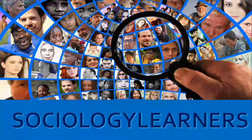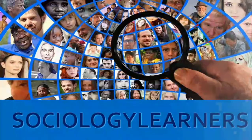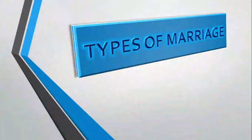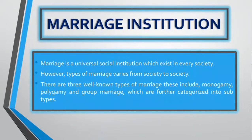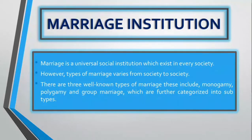Hello, I'm Khuchdelkhan Kasi and welcome to Sociology Learners. In this tutorial we will discuss different types of marriage. Marriage is a universal social institution which exists in every society; however, types of marriage vary from society to society. There are three well-known types of marriage: monogamy, polygamy, and group marriage, which are further categorized into subtypes.